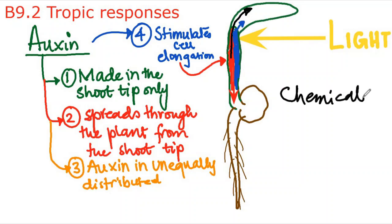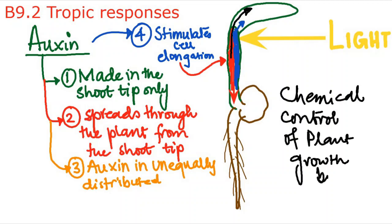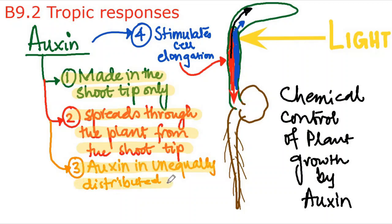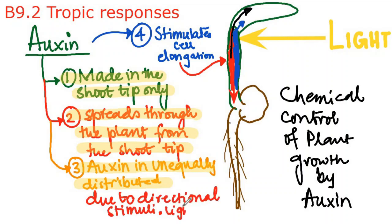As a quick recap of the chemical control of plant growth by auxin: first, auxins are only made in the shoot tip; second, auxins spread through the whole plant from the shoot tip; third, auxin is unequally distributed due to directional stimuli like light or gravity; and fourth, auxin stimulates and accelerates plant growth by cell elongation, in which cells get bigger and their size increases. Remember that growth is the permanent increase in dry mass or size of an organism due to an increase in the number of cells, the size of cells, or both.